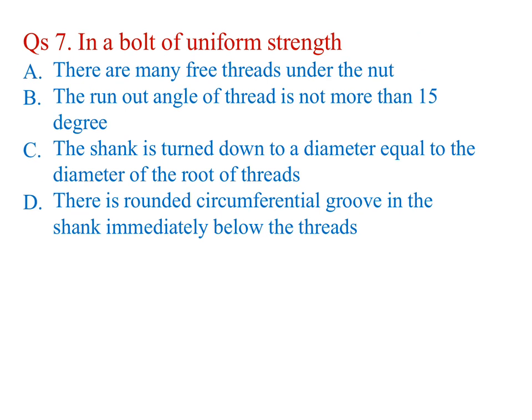In a bolt of uniform strength - this is a very important question, asked many times in PSU exams. Even in IES this question was asked. A. There are many free threads under the nut. B. The run out angle of thread is not more than 15 degrees. C. The shank is turned down to a diameter equal to the diameter of the root of threads. D. There is a rounded circumferential groove in the shank immediately below the threads. C is the answer.